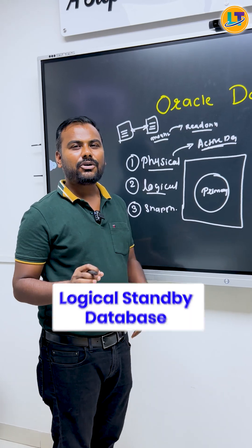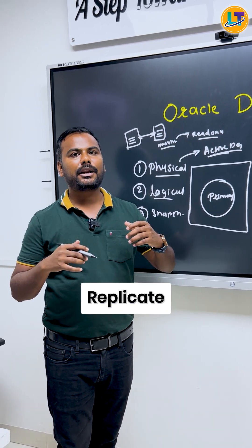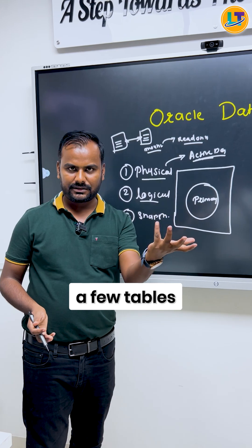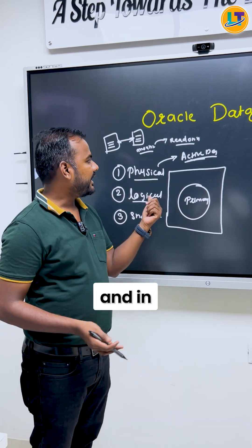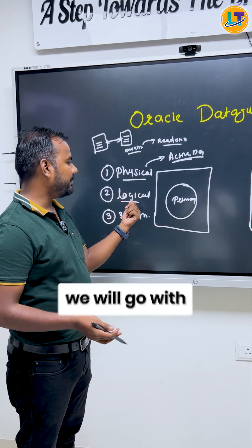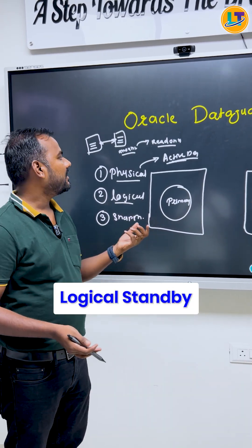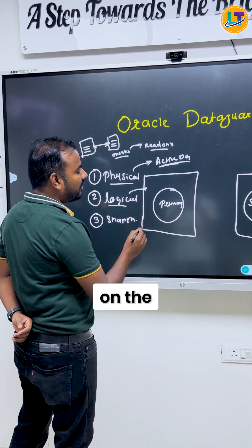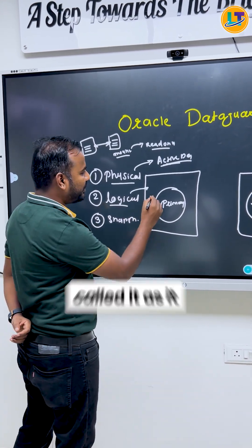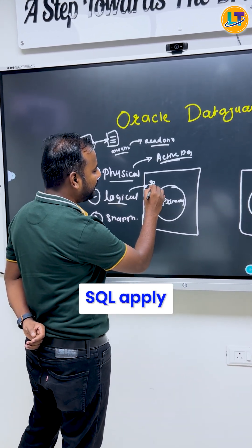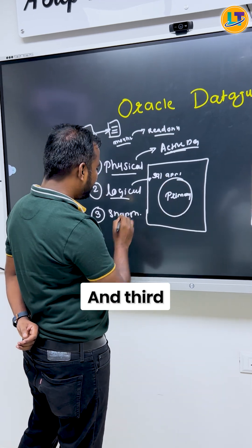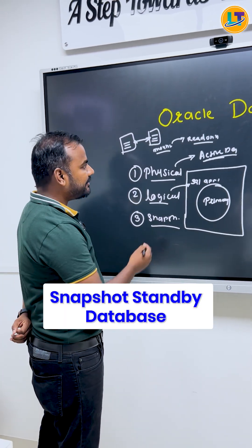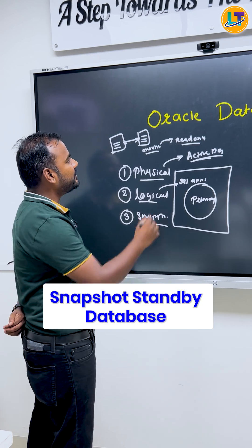The second one is a logical standby database. In a logical standby database, you are not going to replicate everything — for example, if you want to replicate only a few tables, we go with logical standby. This is mainly run on the mechanism we call SQL Apply.